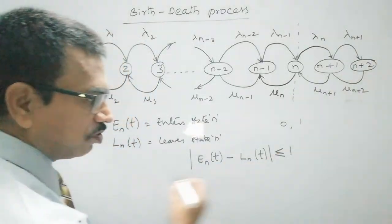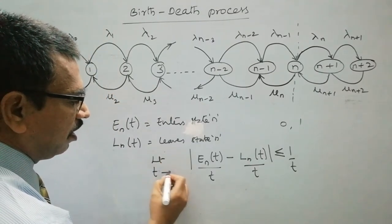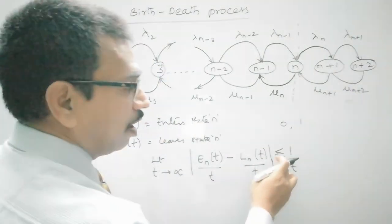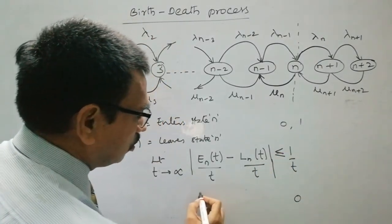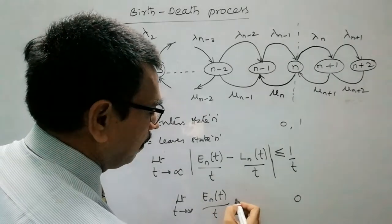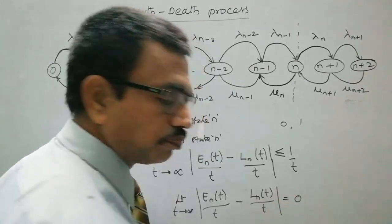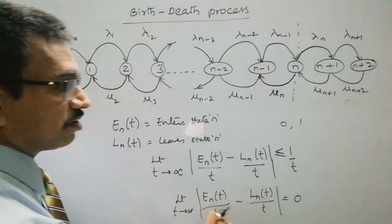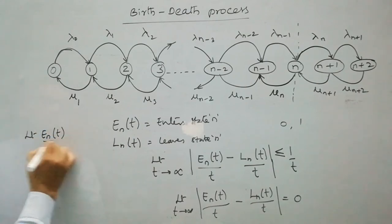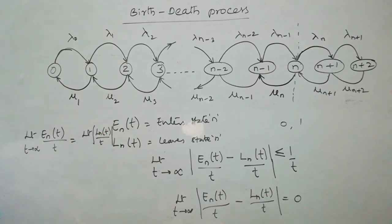Now let us divide this expression throughout by t and take the limit as t tends to infinity. When t tends to infinity, 1/t tends to 0. So the limit of E_n(t)/t minus L_n(t)/t equals 0. We can split this into two terms and write: limit of E_n(t)/t as t→∞ equals limit of L_n(t)/t as t→∞.